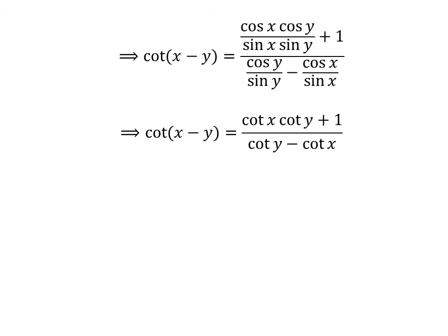Thus, cotangent of x minus y is equal to cotangent of x times cotangent of y plus 1 upon cotangent of y minus cotangent of x.